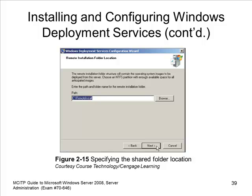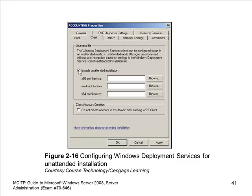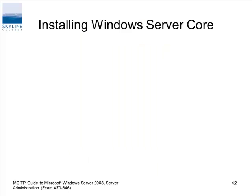The path is C:\RemoteInstall — go ahead and take the defaults. In reality you wouldn't want that install on the C drive because if you keep putting images on there it's going to grow. Unattended installation: we can tell it to do that but it's going to look for an XML file to use. You've got x86, Itanium, and 64-bit architectures, and you can have different unattended files for the different architectures — it'll detect the architecture.